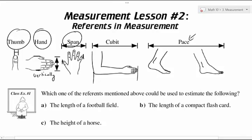So with these, if you had a question like which one of the reference mentioned above could be used to estimate the following, what would you do for a length of a football field? What about the compact flash card, which I would think is some kind of SD card, or the height of the horse? So go ahead and complete class exercise number one.